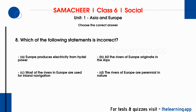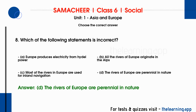Question 8: Which of the following statements is incorrect? Options are: A. Europe produces electricity from hydel power, B. All the rivers of Europe originate in the Alps, C. Most of the rivers in Europe are used for inland navigation, D. The rivers of Europe are perennial in nature. Correct answer is D, the rivers of Europe are perennial in nature.